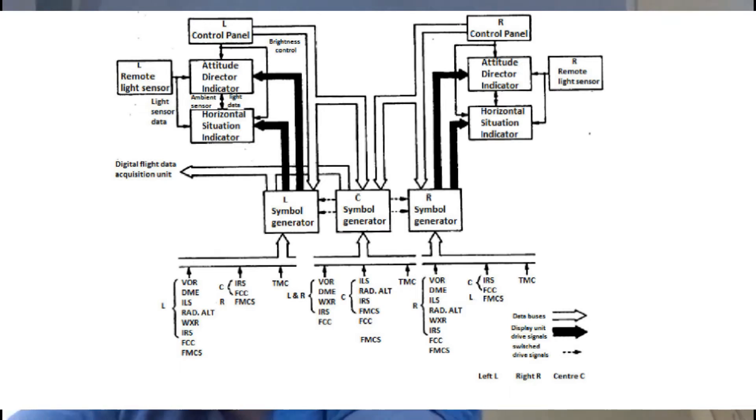The EICAS and ECAM systems are not used jointly on any aircraft. There are two aircraft manufacturers: Boeing and Airbus. Boeing uses the EICAS electronic system and Airbus uses the ECAM electronic system. As we know about the clashes of both manufacturers, that's why they both are using different electronic systems.